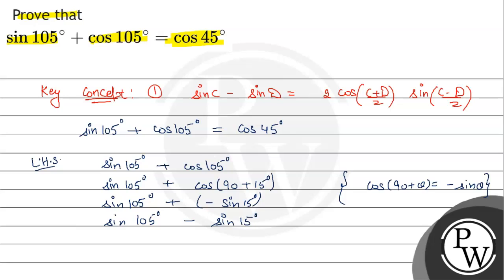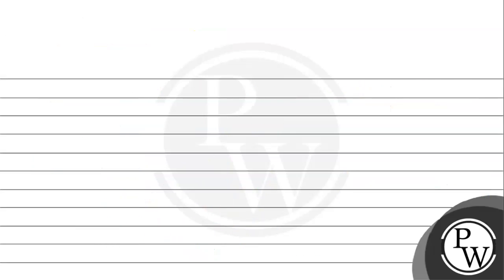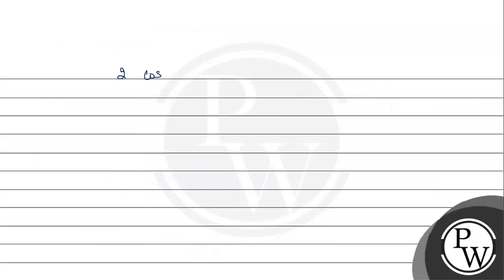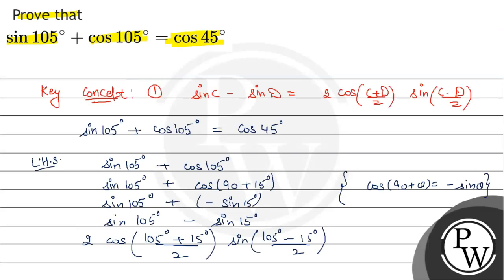Now we apply the sin C minus sin D formula. This gives 2 into cos (105 degree plus 15 degree) upon 2, into sin (105 degree minus 15 degree) upon 2. That is 2 into cos 60 degree into sin 45 degree.